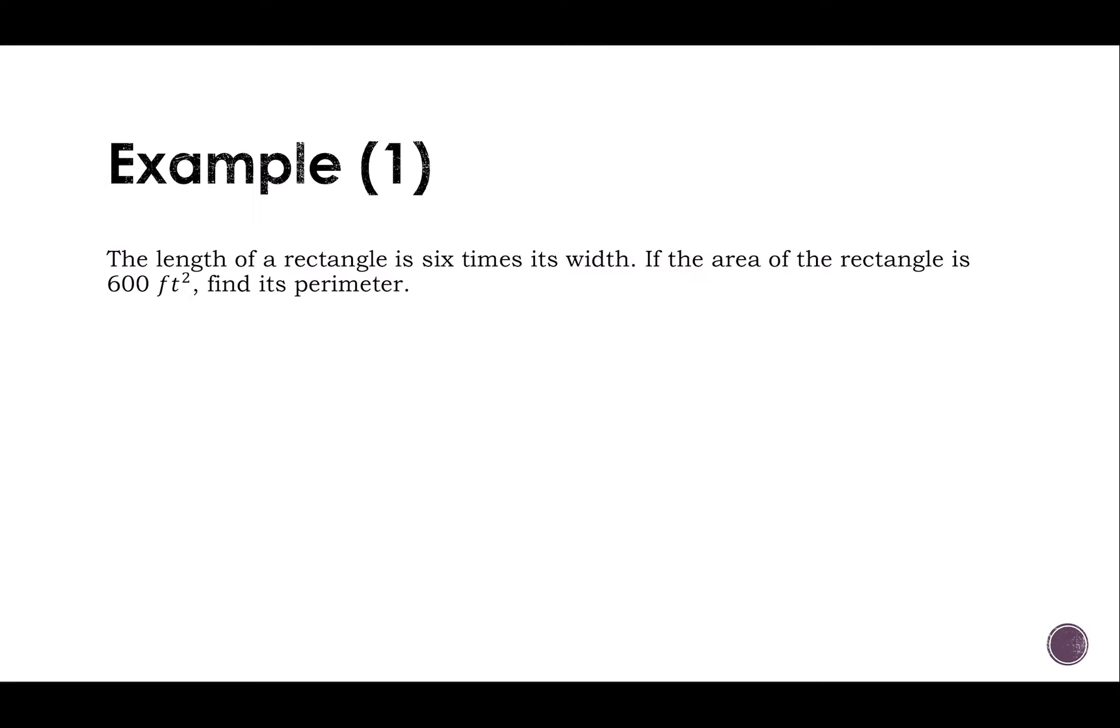Some things we need to know before we get started when it comes to rectangles are that the area is the length times the width, and the perimeter would be two times the length plus two times the width.